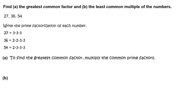Part A: to find the greatest common factor, multiply the common prime factors. The common prime factors of 27, 36, and 54 are 3 and 3. So, the greatest common factor equals 3 times 3, which equals 9.